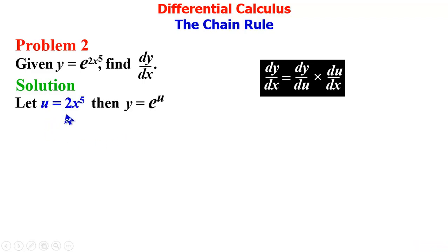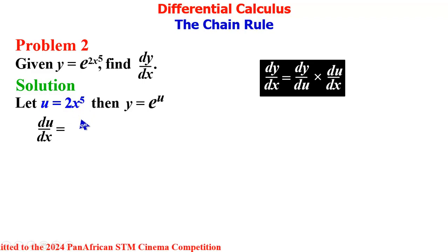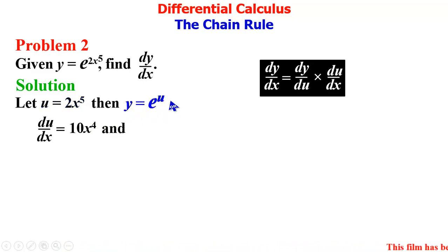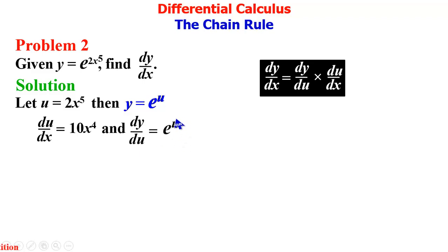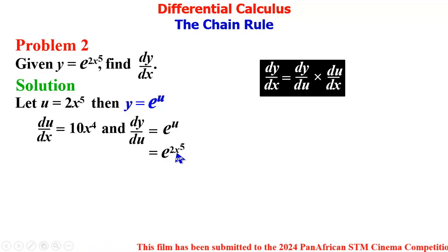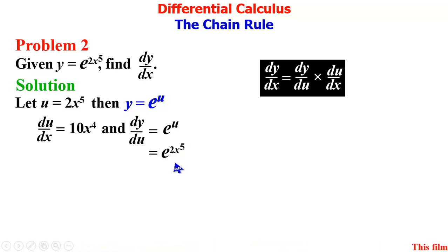Starting with du/dx: differentiating 2x⁵ gives 5 × 2 = 10, and reducing the power by 1, we have du/dx = 10x⁴. For y = e^u, the derivative of e^u with respect to u is e^u, so dy/du = e^u. We then bring back our u = 2x⁵, so dy/du = e^(2x⁵).